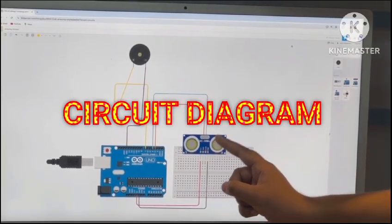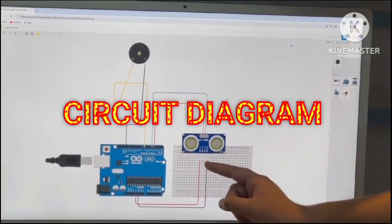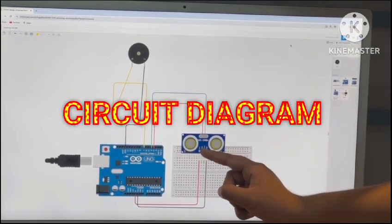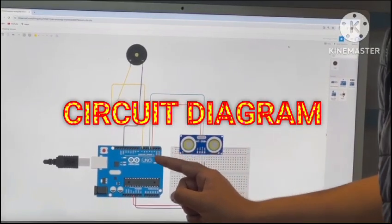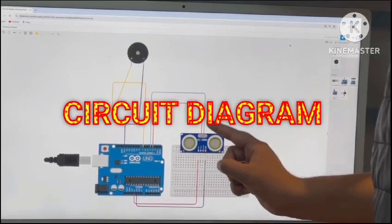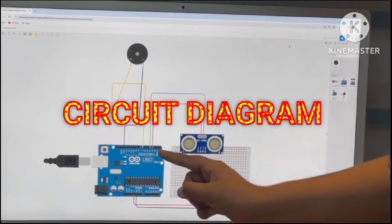Trigger and echo both are connected together over here and from the back, trigger is connected to the number 3 pin whereas echo is connected to the number 4 pin.